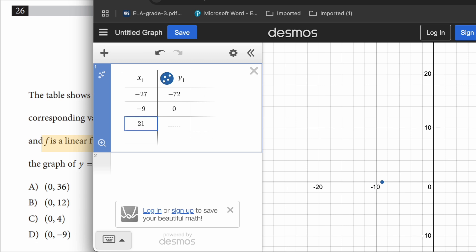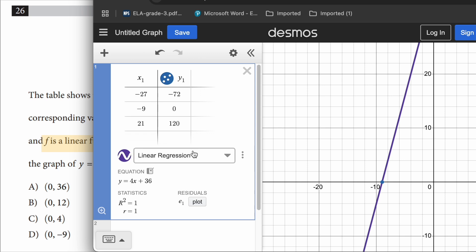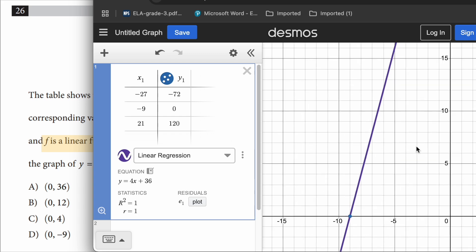And the corresponding y value is 120. Now to get the line, you go to the left side, you say add regression. So we're going to click on that. That creates a linear regression. Since our function is linear, the linear regression is going to fit perfectly. Now we need to find the y-intercept.